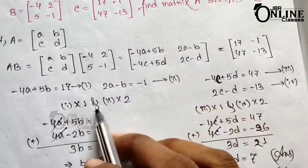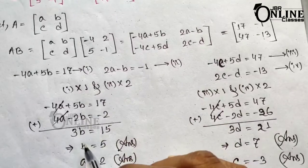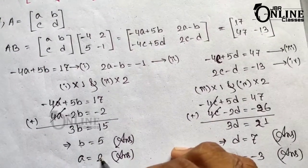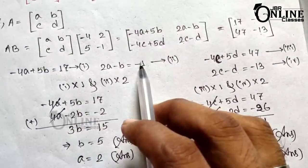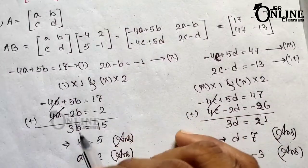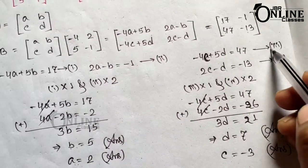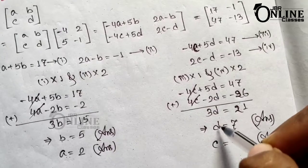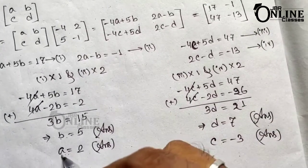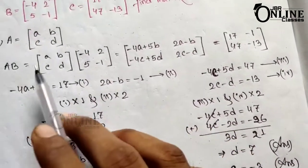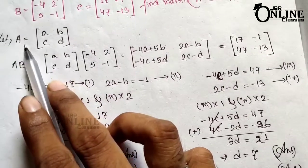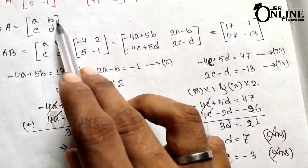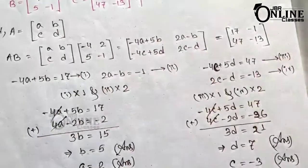Solving equations 1 and 2 by elimination: we get 3b equals 15, so b equals 5, and a equals 2. From equations 3 and 4 by elimination, we find c and d. Putting all values together, matrix A equals [2, 5; minus 3, 7].